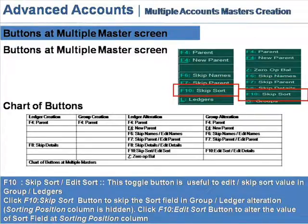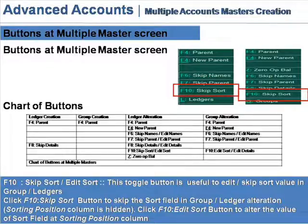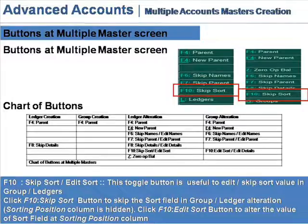F10 Skip Short / Edit Short. This toggle button is useful to edit or skip the short value of groups and ledgers. Click the F10 Skip Short button to skip the short field in group or ledger alteration — the sorting position column is then hidden. Click the Edit Short button to alter the value of the short field at the sorting position column.